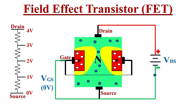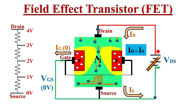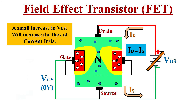The electrons flow through this narrow path and constitute drain and source current. Because of the reverse biased PN junction, only a small amount of reverse saturation current will flow through the gate terminal, and in practical cases this gate current IG can be considered as zero.